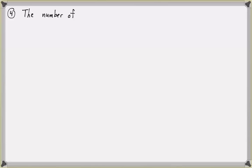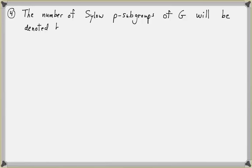One more definition. In the future, we'll prove some theorems about Sylow p-subgroups, so it can be helpful to have notation for the number of Sylow p-subgroups of a group G. The number of Sylow p-subgroups of G will be denoted by n sub p. So for any particular group G, the number of Sylow p-subgroups is n sub p.